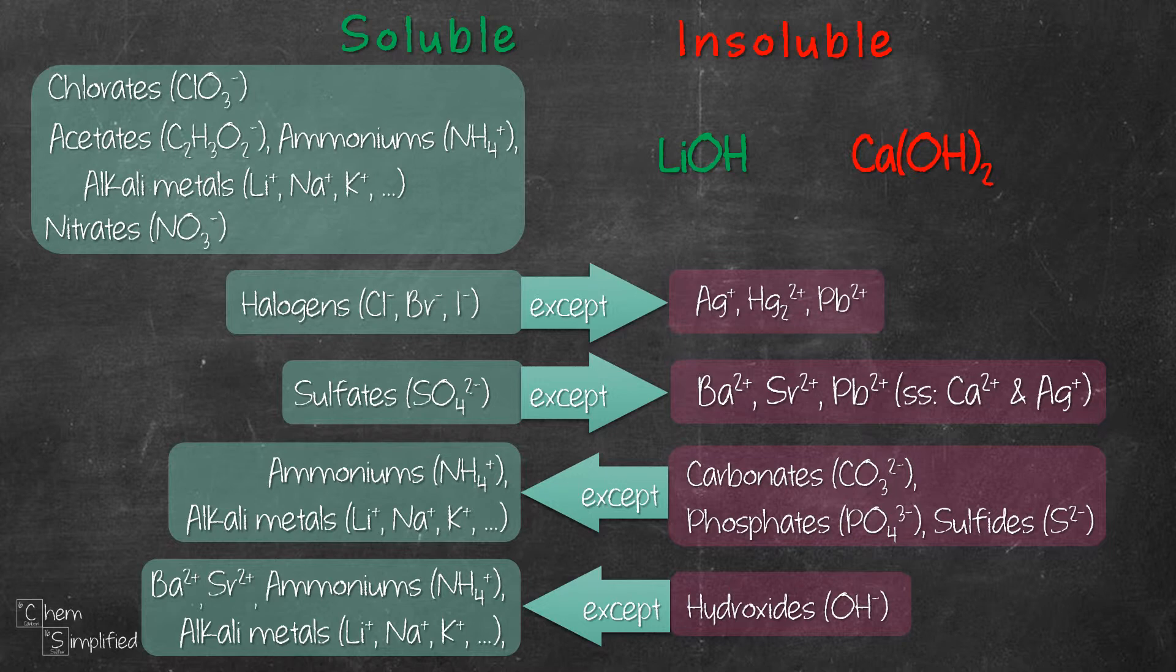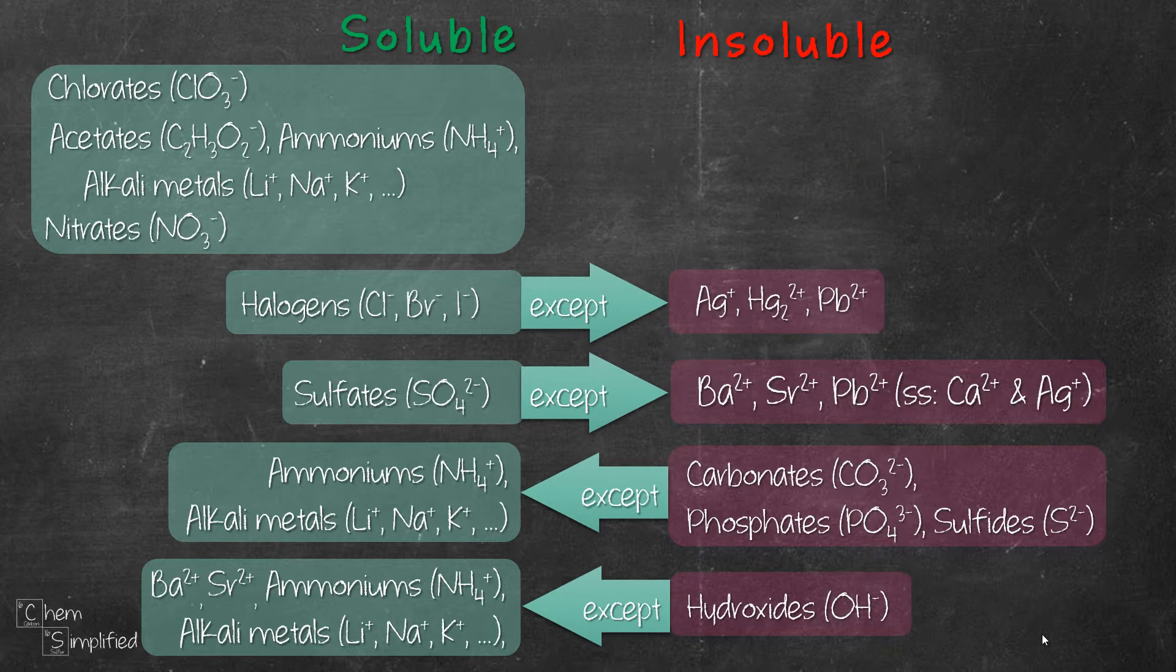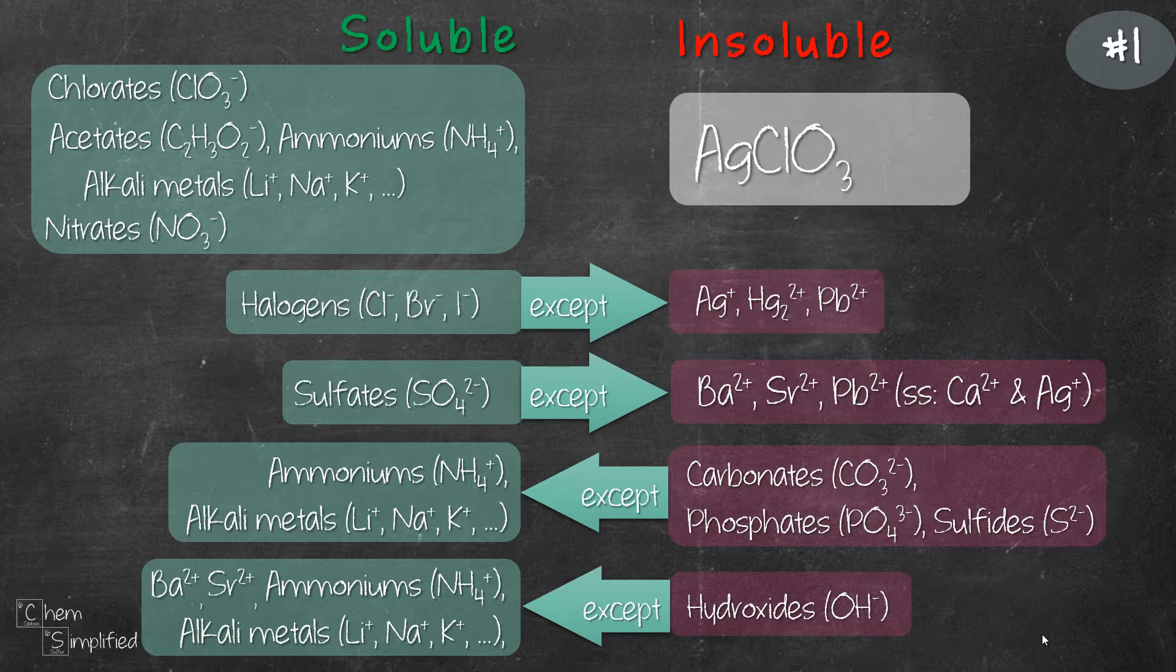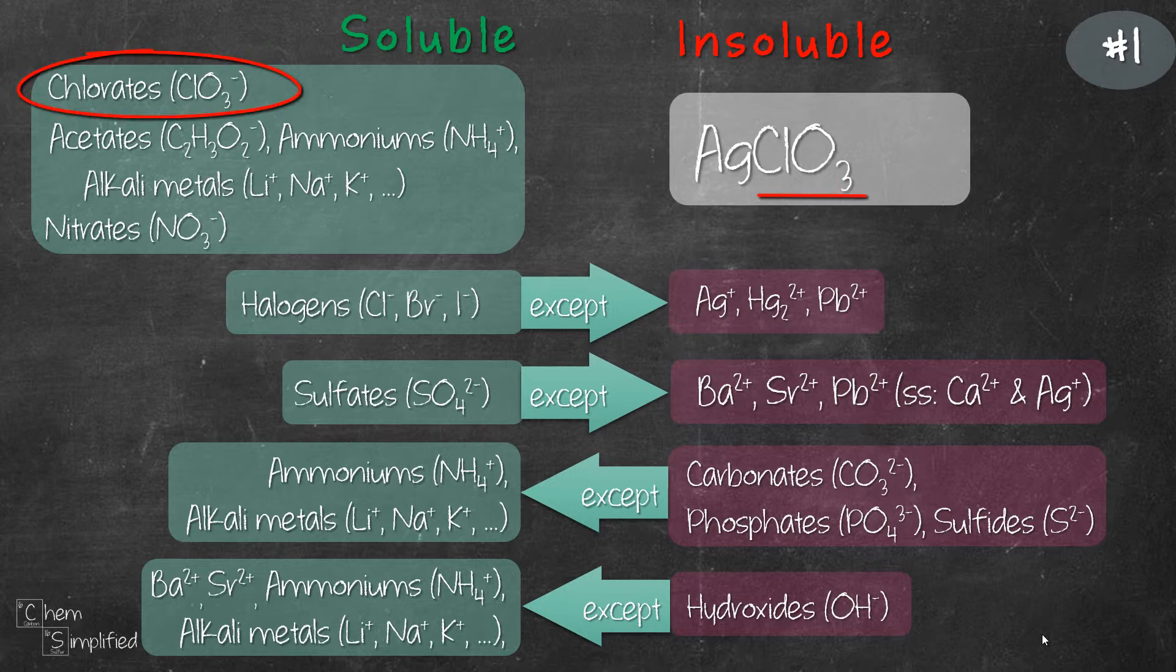Now that we're done constructing our solubility table or solubility rules, are you ready to take it for a spin? The best way to learn is to give it a try. So why don't we try classifying a few substances as soluble or insoluble? Our first example is silver chlorate, AgClO3. First thing we have to do is look at its anion, chlorate, ClO3. Since all chlorates are soluble, and there's no exception, that means AgClO3 is soluble, making it aqueous.